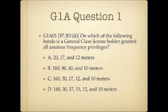Question 1. On which of the following bands is a general class license holder granted all amateur frequency privileges? A. 20, 17, and 12 meters. B. 160, 80, 40, and 10 meters. C. 160, 30, 17, 12, and 10 meters. Or D. 160, 30, 17, 15, 12, and 10 meters.